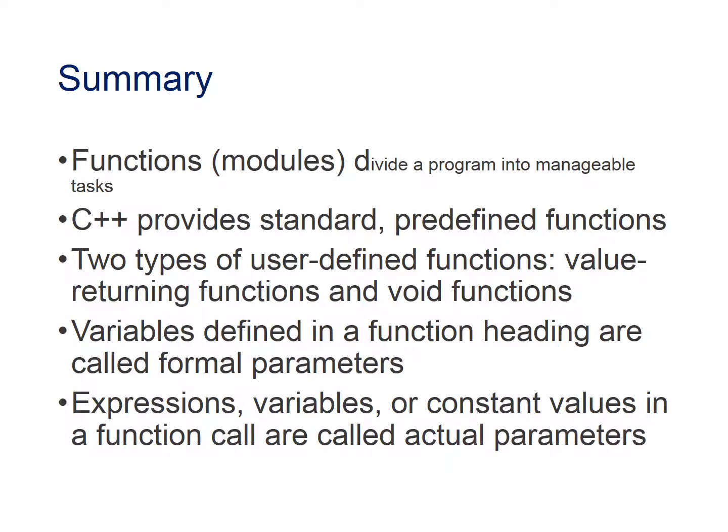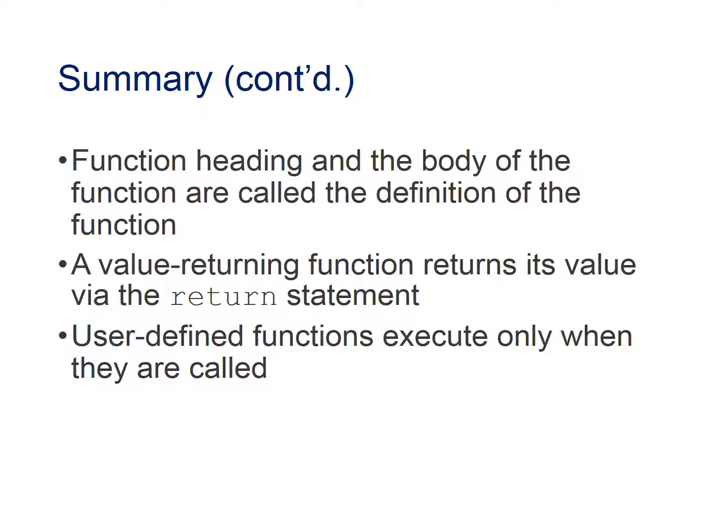Summary. Functions divide a program into manageable tasks. C++ provides standard predefined functions. Two types of user-defined functions are value-returning functions and void functions. Variables defined in a function heading are called formal parameters. Expressions, variables, or constant values in a function call are called actual parameters. The function heading and the body of the function are called the definition of the function. A value-returning function returns its value via the return statement, and user-defined functions execute only when they are called.